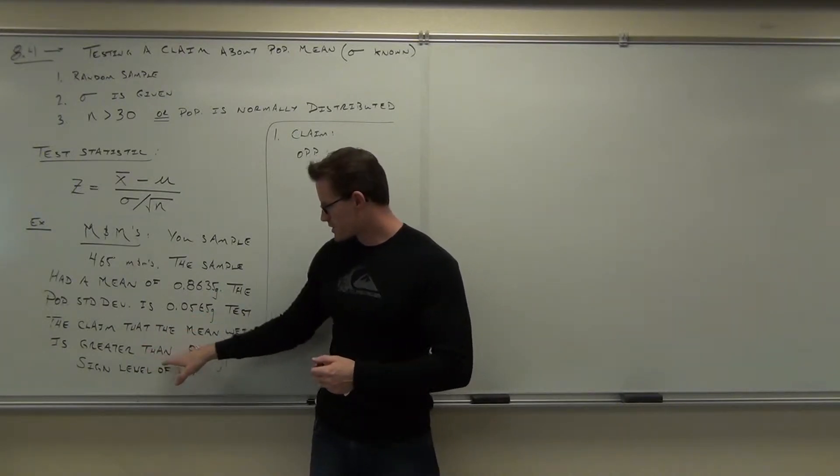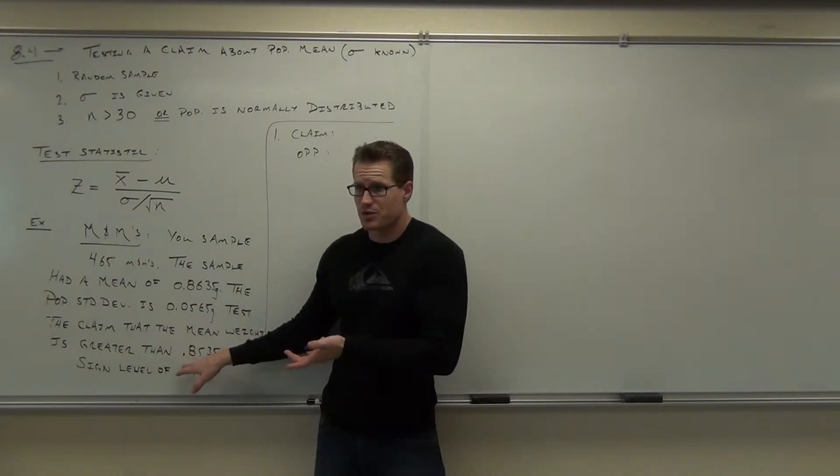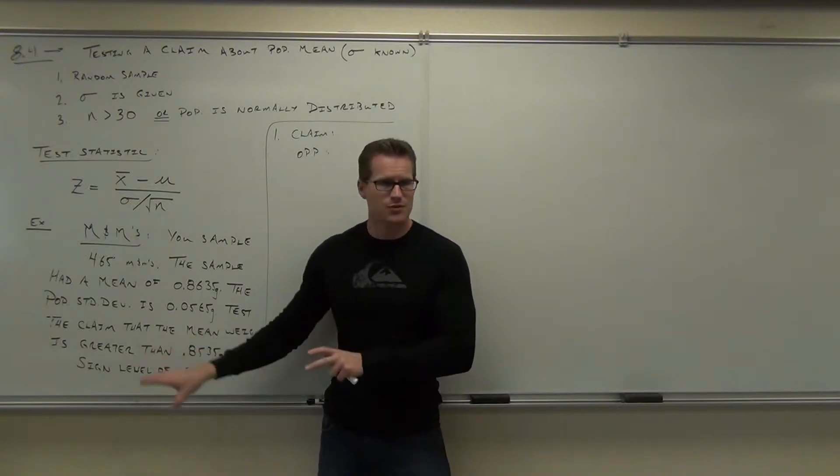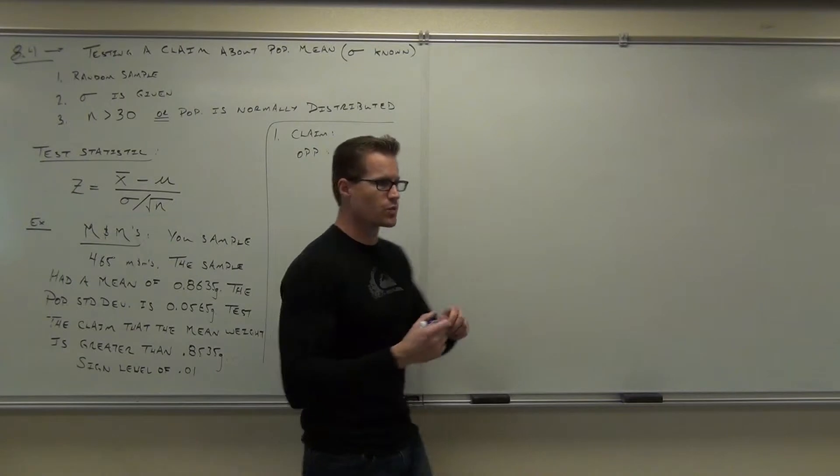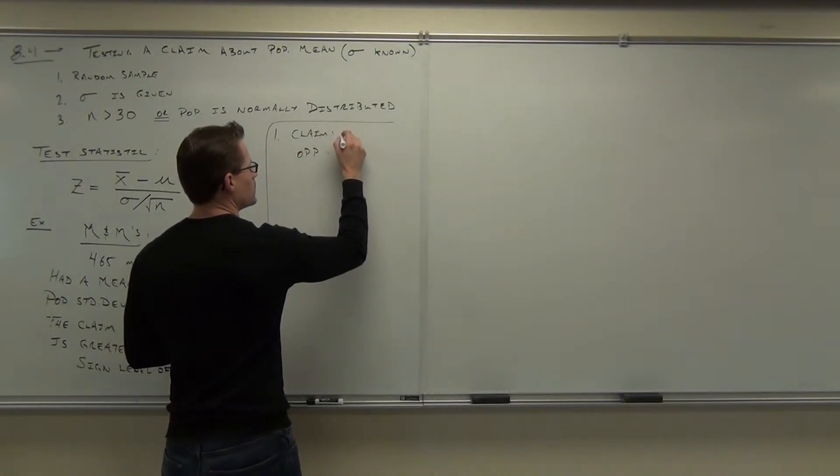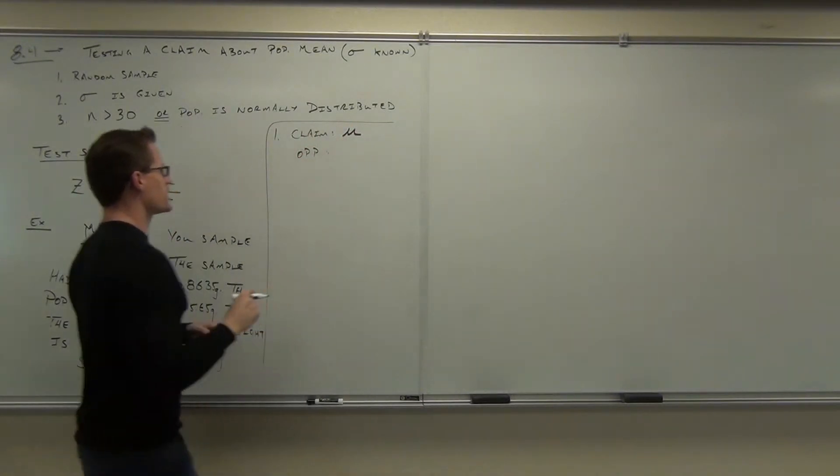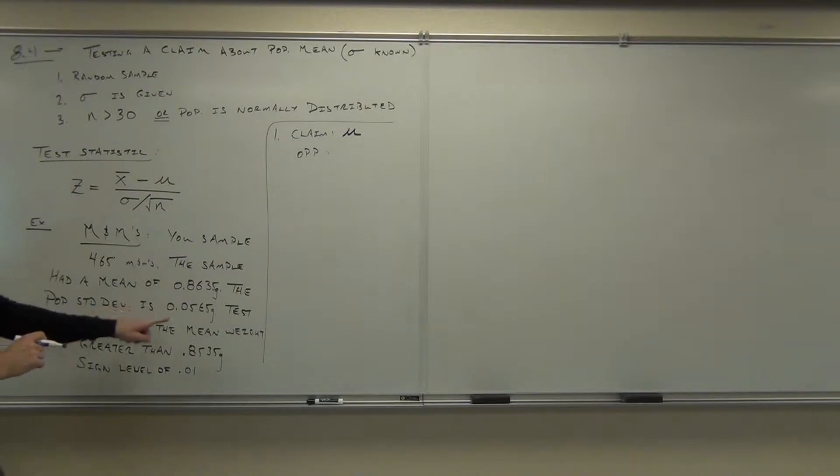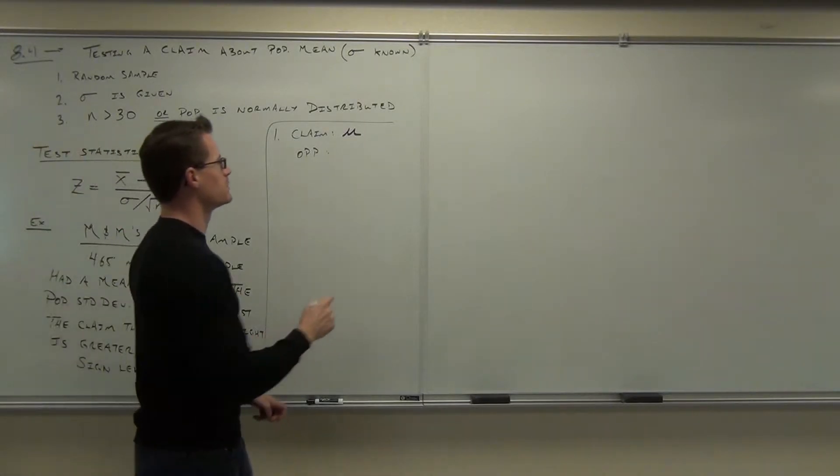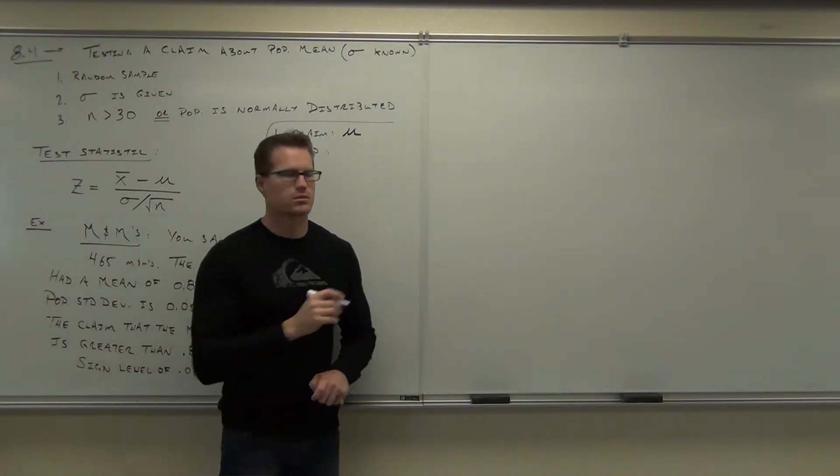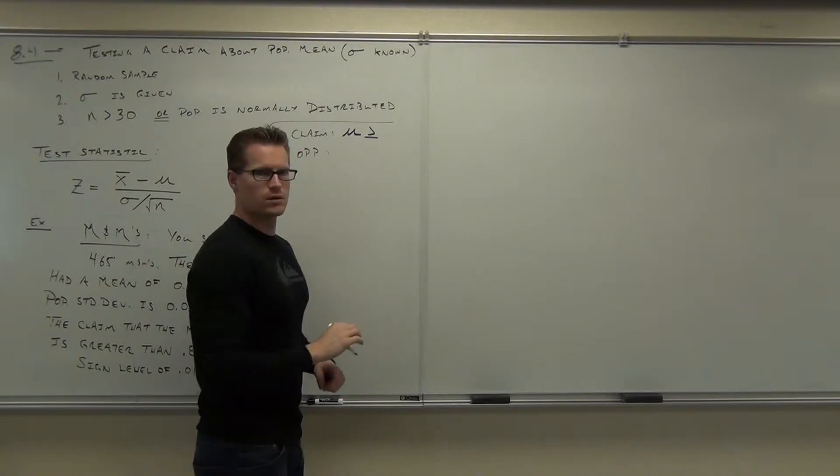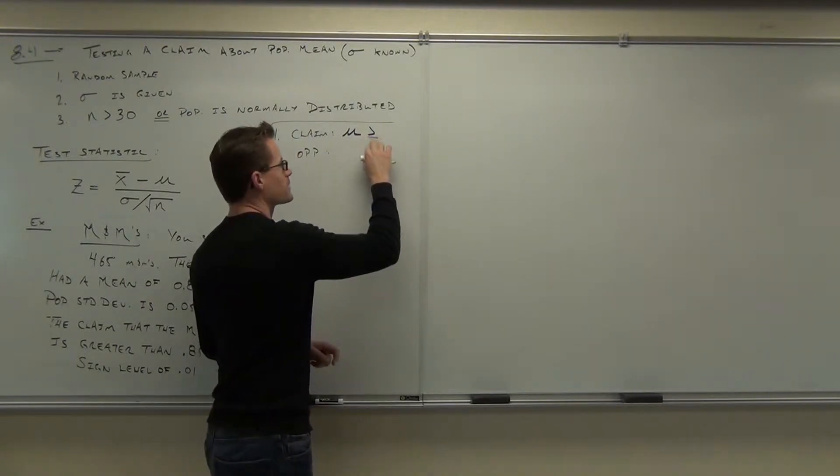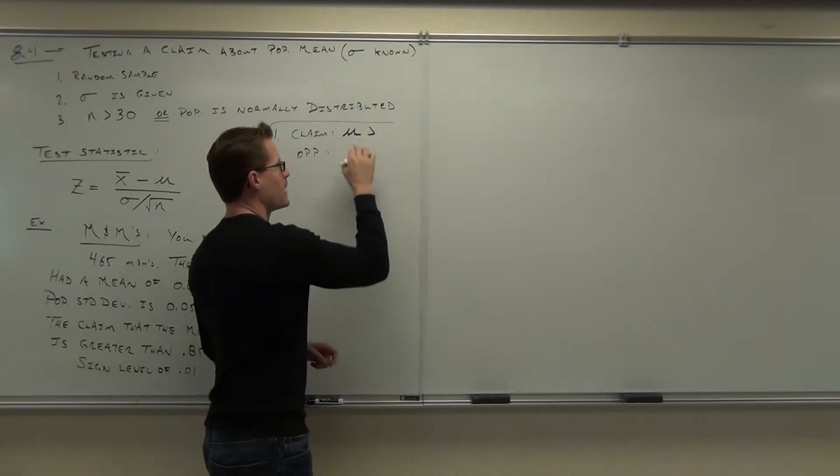Even though this looks like it could potentially be a proportion because it has a decimal number, does it have to be a proportion if it's a decimal? No, this is actually a mean. So we're talking about mu. So the claim says that the mu is, let's see, test the claim that the mu is greater than, how do I, like this? That is greater than.